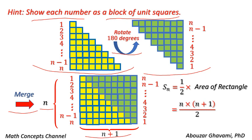Merge these two block sets together to form a rectangle with height n and width n plus 1. Calculate the sum of the first n natural numbers as the area of each of these block sets, that is equal to half of the area of the rectangle, and it is calculated as n times n plus 1 divided by 2.